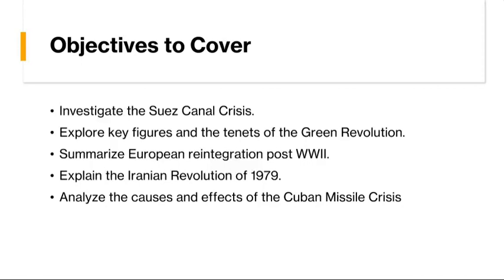We'll then shift our focus to the Middle East, where we will delve into the Iranian Revolution of 1979, an upheaval that transformed Iran's political landscape and reverberated across the region. Fueled by widespread discontent with the autocratic rule of Shah Muhammad Reza Pahlavi and inspired by the ideals of Islamic revivalism espoused by Ayatollah Khomeini, the revolution culminated in the establishment of an Islamic republic. The revolutionaries' anti-Western rhetoric and subsequent hostage crisis at the U.S. Embassy in Tehran strained Iran's relations with the international community, setting the stage for decades of geopolitical tension and regional instability.